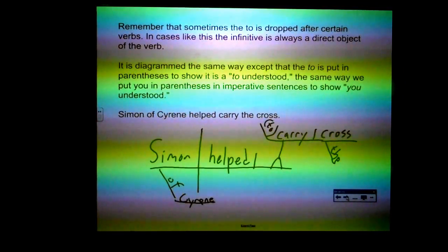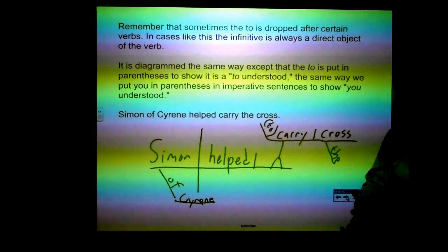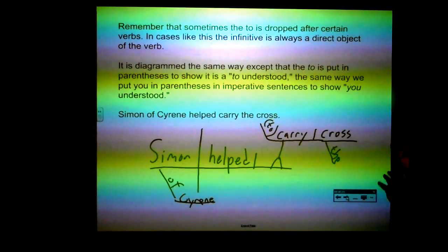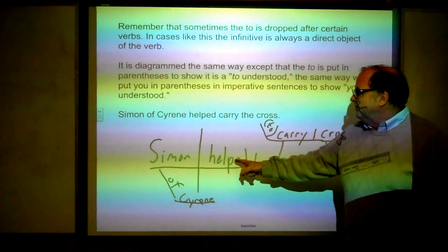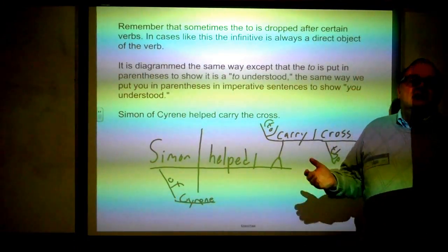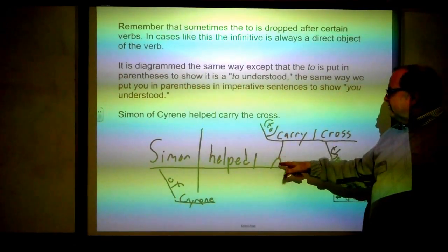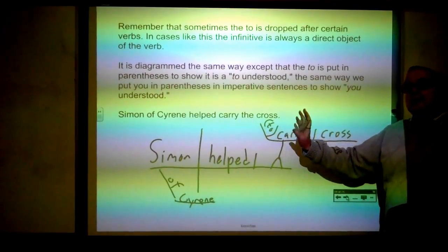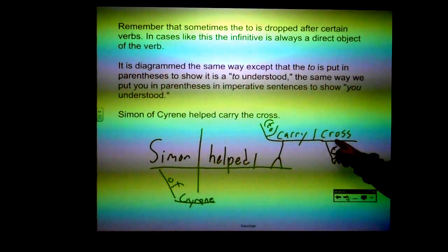Remember that sometimes "to" is dropped after certain verbs. In that case, the infinitive is always a direct object and is diagrammed the same way, except "to" is put in parentheses to show it is "to" understood — the same way you put "you" in parentheses in an imperative sentence. For example: "Simon of Cyrene helped carry the cross." The verb is "helped," Simon is the subject, "of Cyrene" modifies Simon. The direct object goes on a noun stand: "to carry" — with "to" in parentheses. "Cross" is the direct object of "carry," and "the" modifies "cross."